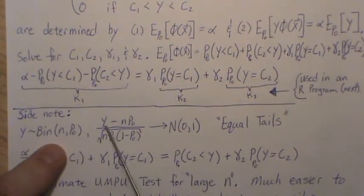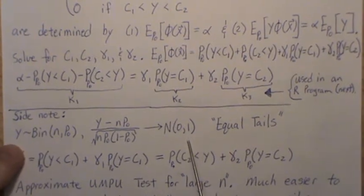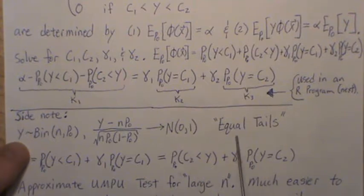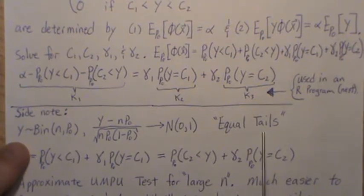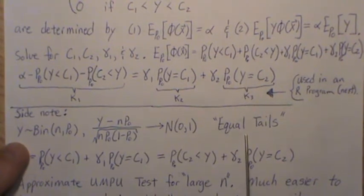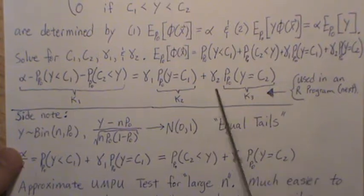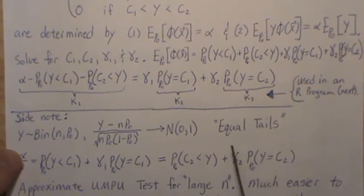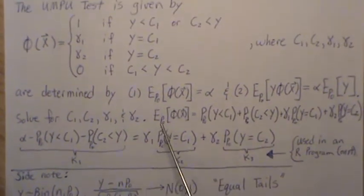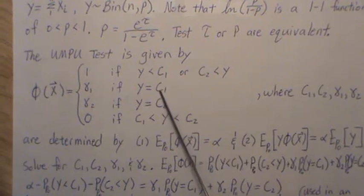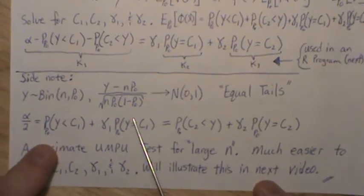But for this video, we don't need k1, k2, and k3. We just have this equation, and then we're going to develop this equation. But before we do that, this is a total side note, and this approach is more what people use. Y is distributed with a binomial, and the central limit theorem says this converges to a standard normal distribution. So y, as n gets large, roughly follows a normal distribution. So why not use sort of an equal tails approach?